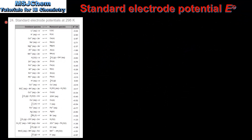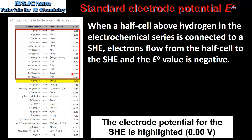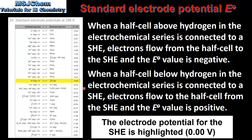To summarize, referring back to section 24 of the IB Data Booklet: when a half cell above hydrogen in the electrochemical series is connected to a standard hydrogen electrode, electrons flow from the half cell to the standard hydrogen electrode and the electrode potential value is negative. Any half cell from lead upwards will undergo oxidation, because the metal is a stronger reducing agent than hydrogen gas. Conversely, when a half cell below hydrogen is connected, electrons flow to the half cell and the electrode potential is positive — those half cells undergo reduction because their ions are stronger oxidizing agents than hydrogen ions.